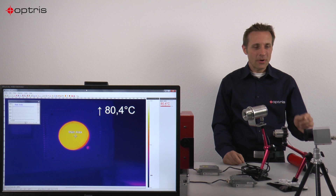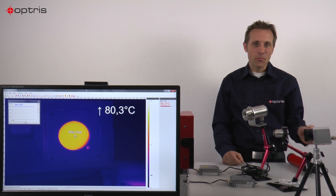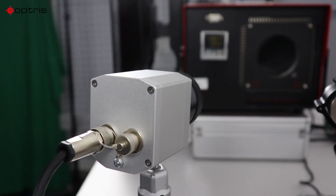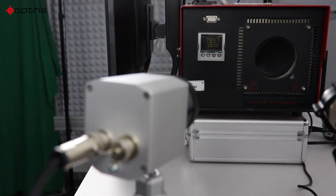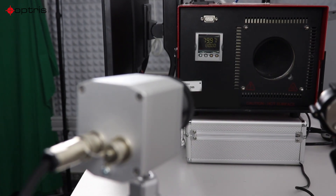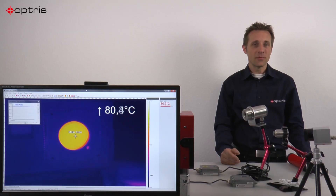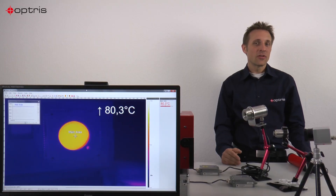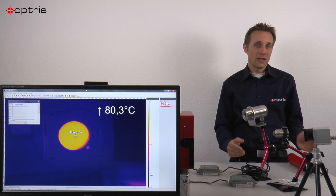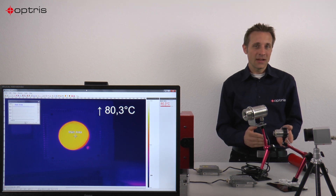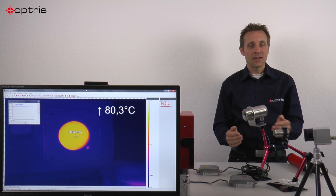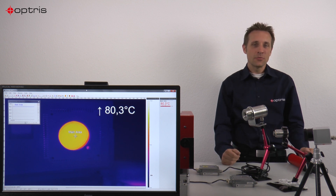Let's have a look at our infrared camera which has a wavelength of 8 to 14 micron. It depends on your material whether you can measure on the foil material or through the foil material. In one case the material can be transmissive, in the other case the material cannot be transmissive.